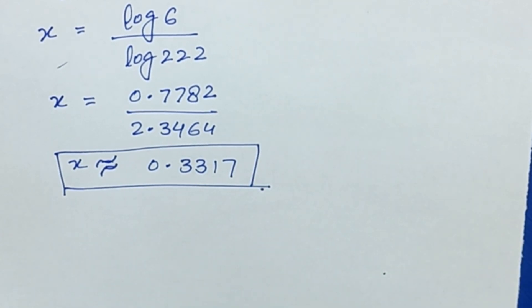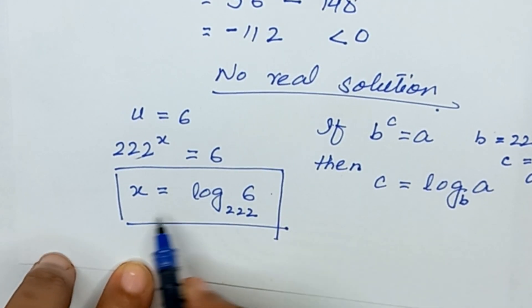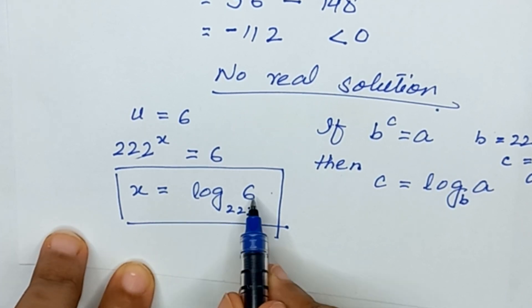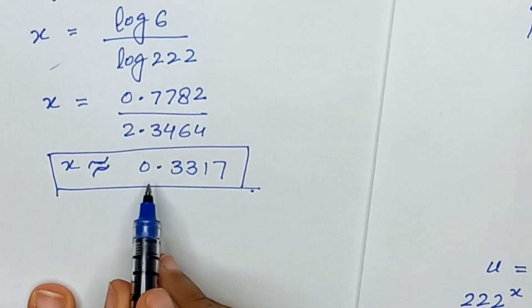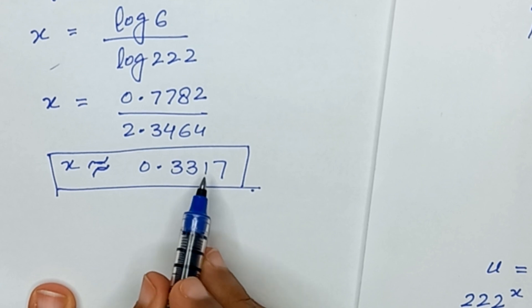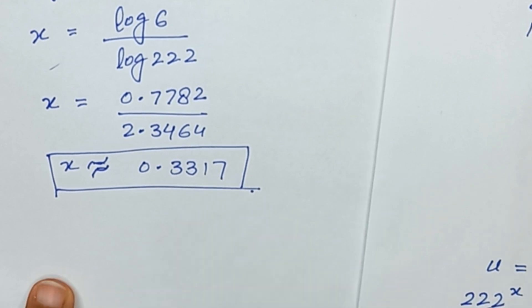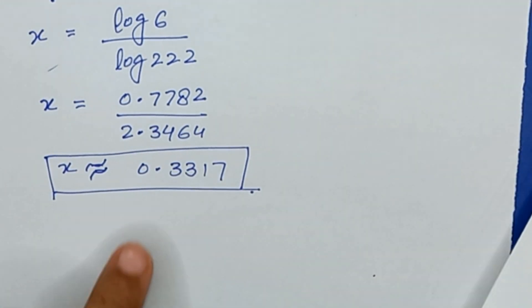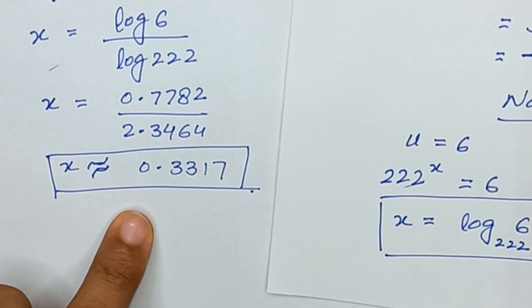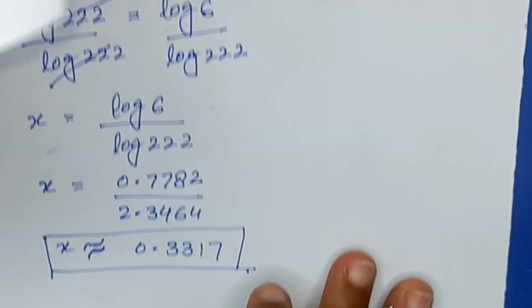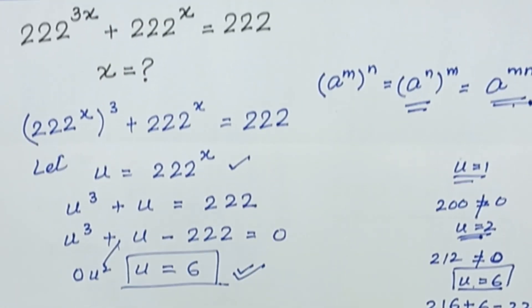So we can write x = log base 222 of 6, which is approximately 0.3317. These are the values of x for this solution. Hope you liked the video — if so, please subscribe to my channel. Thank you.